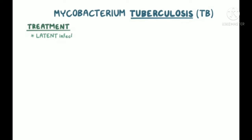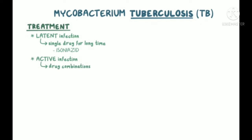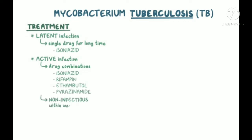Treatment of latent TB infection typically involves using a single drug for a prolonged period of time — the most common approach is isoniazid for 9 months. Treatment of active TB disease is typically done with different combinations of anti-TB antibiotics, like isoniazid, rifampin, ethambutol, and pyrazinamide, which results in patients being non-infectious to others usually within a few weeks.